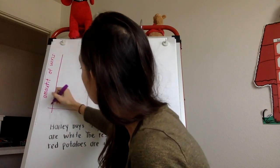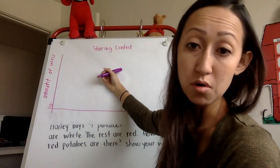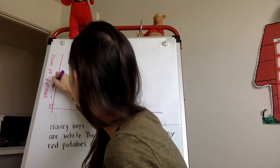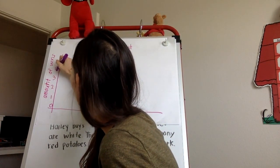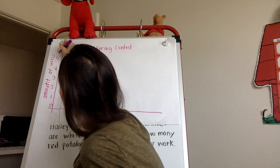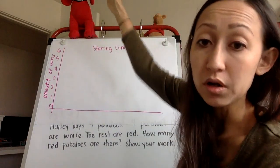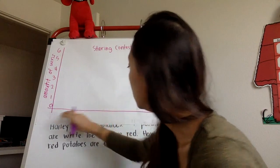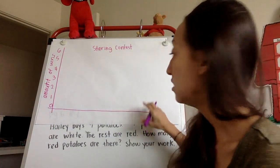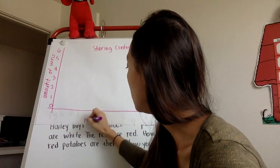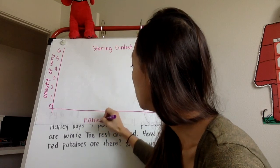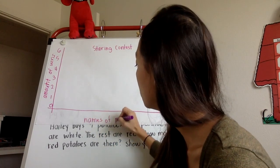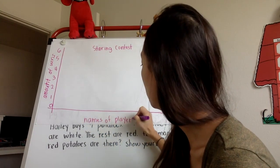The y-axis is going to show the amount of wins. So 0, 1, 2, 3, 4, 5, 6. And you might need more depending on the data that you get. And then on the x-axis, you're going to label that names of players, whatever you want to call it.